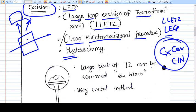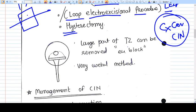In LEEP, a large part of TZ can be removed en bloc. It's with the help of an electrosurgical loop. This is a wired loop and we can just take out the en bloc material. It's a very useful method.